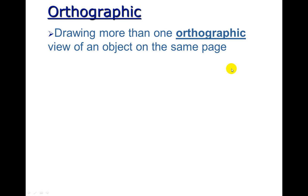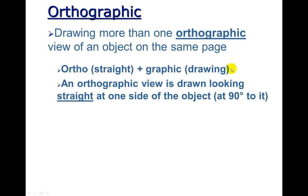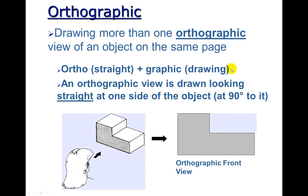Again, orthographic and multi-view, I'm going to use those interchangeably. Because ortho means straight. Graphic means drawing. So an orthographic view is shown looking straight at one side of the object. And looking at the line of sight. This particular object, this would be its front view.